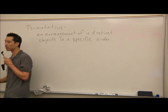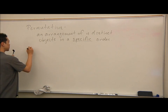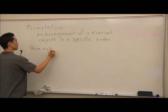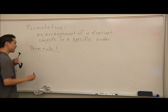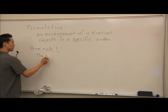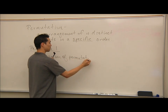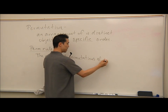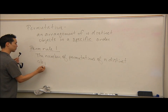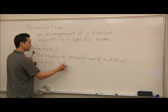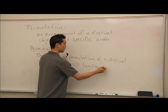With permutations, it's really important that you remember that order does matter. Permutation rule number one: the number of permutations of n distinct objects taken all together is n factorial.